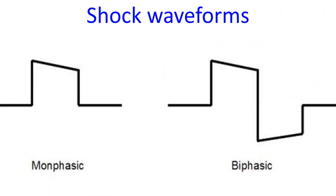Though the voltage is very high, it is delivered only for a fraction of a second and in a specially controlled manner. The energy used in a biphasic device is 150 to 200 joules, while that in a monophasic device could be as high as 360 joules. Biphasic devices are more efficient than monophasic devices, which are being phased out.